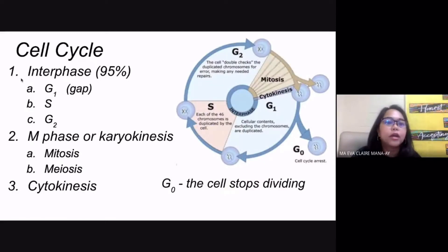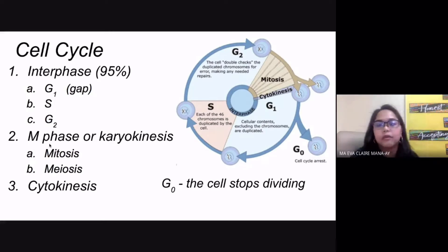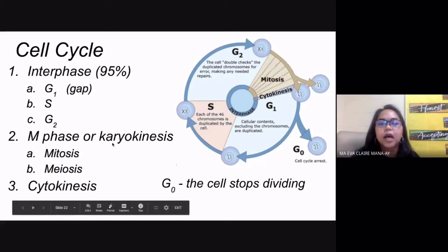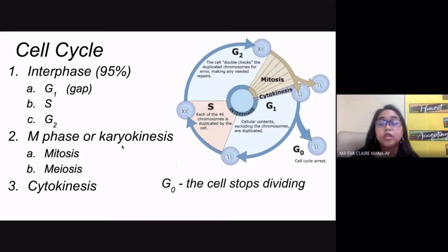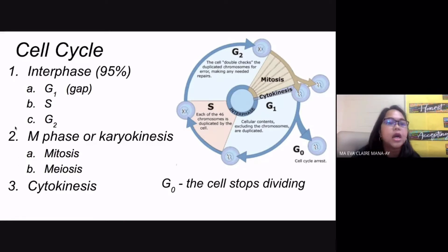The first stage is the interphase. The second is the M phase, also called karyokinesis — karyo means nucleus, so karyokinesis is the division of the nucleus, or nuclear division. The two types are mitosis and meiosis. The last stage is cytokinesis, which is cytoplasmic division — your cytoplasm is divided.